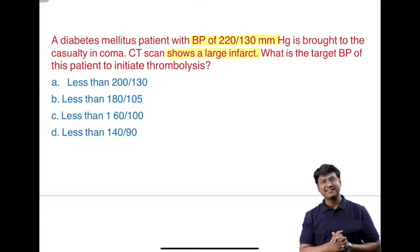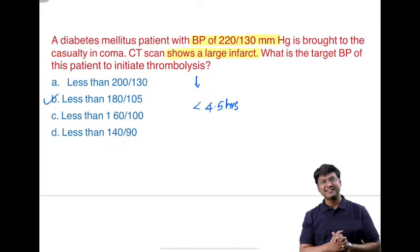First and foremost, in order to initiate thrombolysis, the onset of neurological deficit should have been within 4.5 hours. The target blood pressure for initiating thrombolysis should be less than 180/105 mmHg. Now let me discuss how to achieve that blood pressure of less than 180/105.